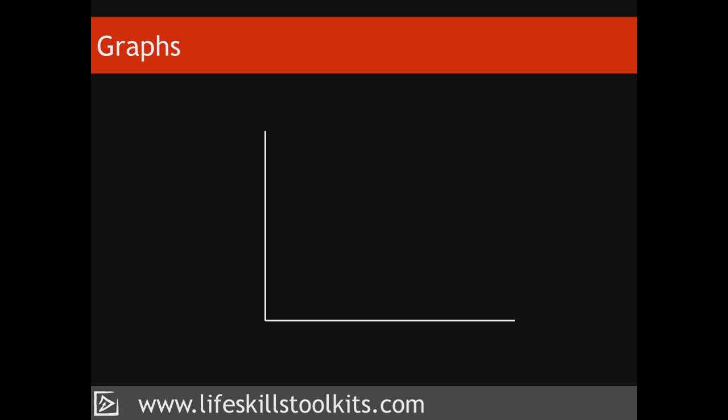A graph is a great way to track our progress over the time that we have set ourselves for completing our goal, sub-goal, or task. A graph has two axes — an x-axis and a y-axis. The convention is for time to be plotted along the x-axis. The thing that we want to track is plotted on the y-axis.